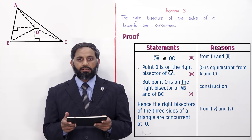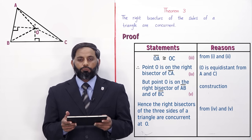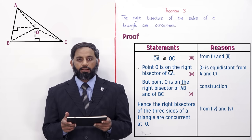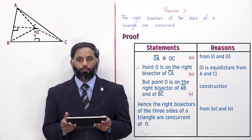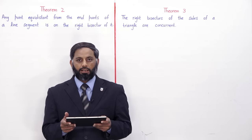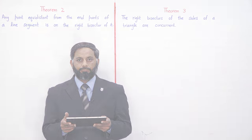So students, here we proved that the three right bisectors of a triangle meet at one point. In today's lecture we covered the first three theorems of Chapter 12. In the next lecture we will prove the last three theorems of this chapter. Take good care of yourself. Allah Hafiz.